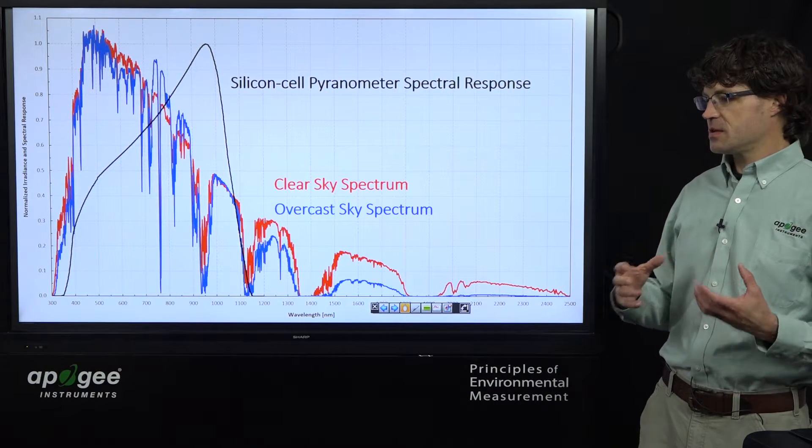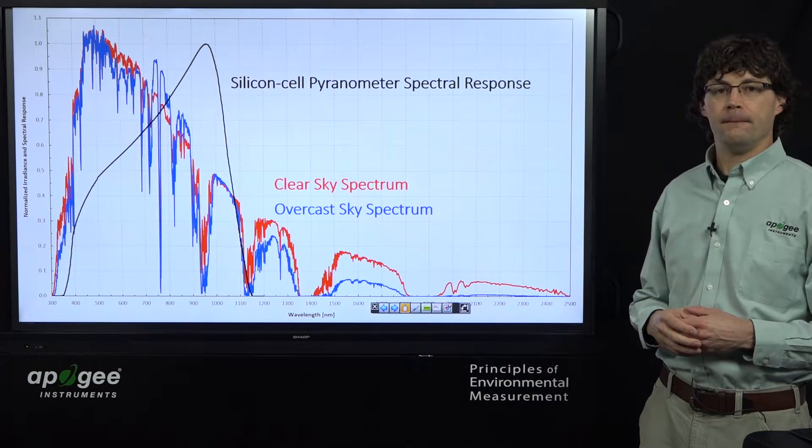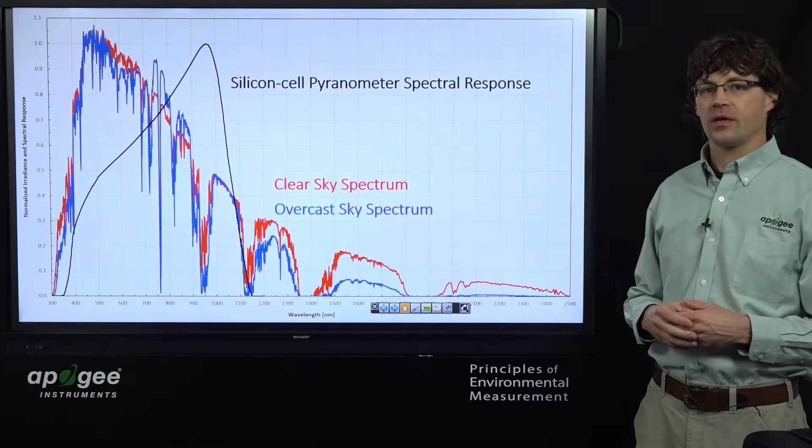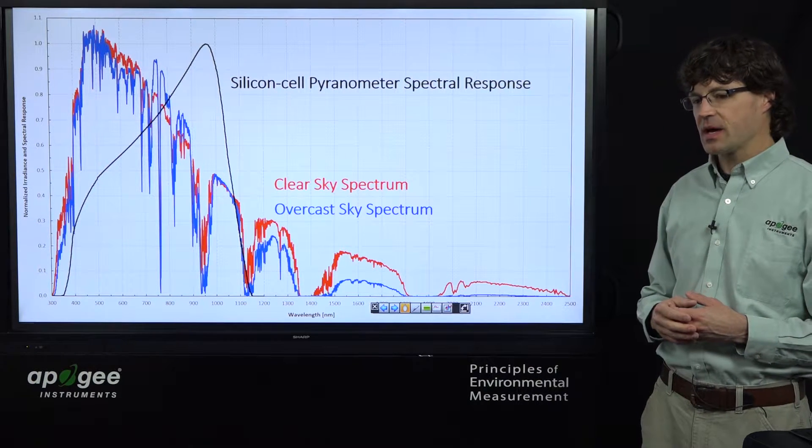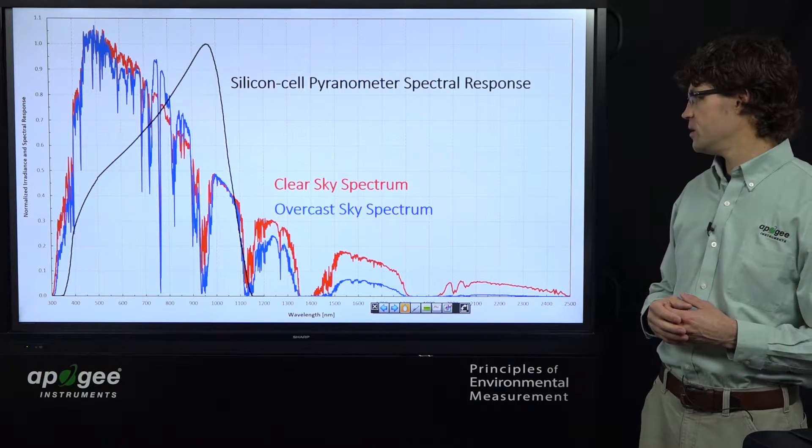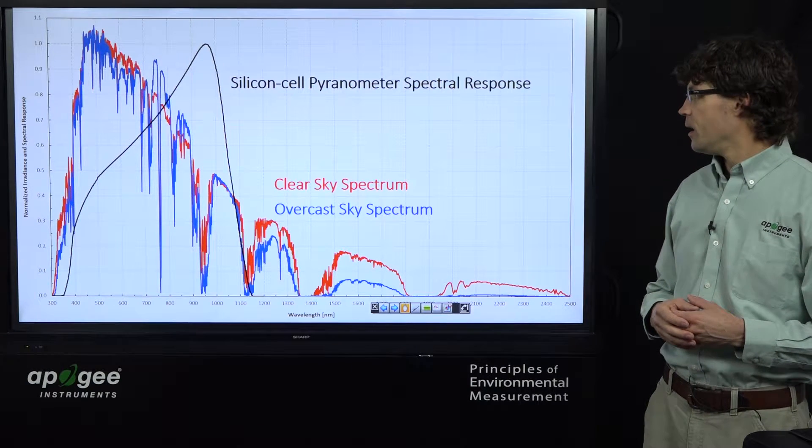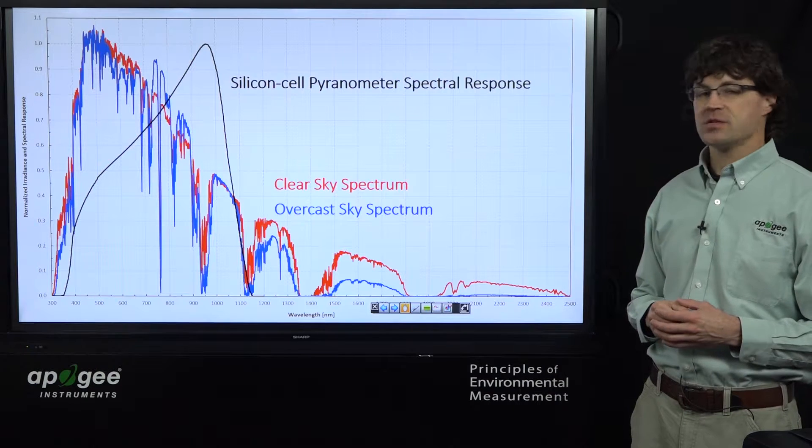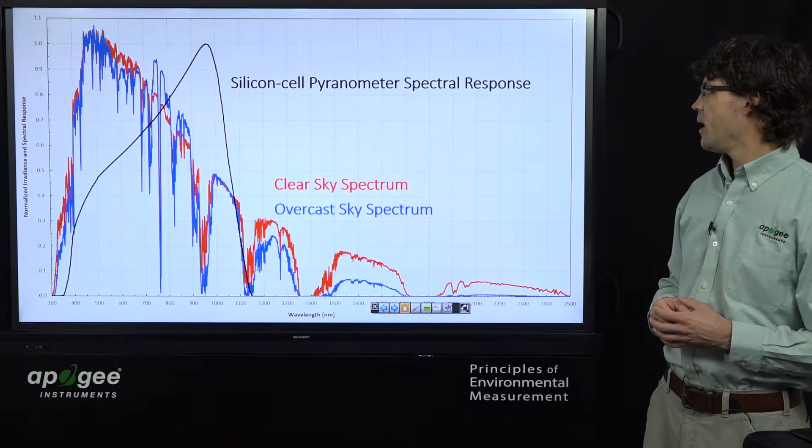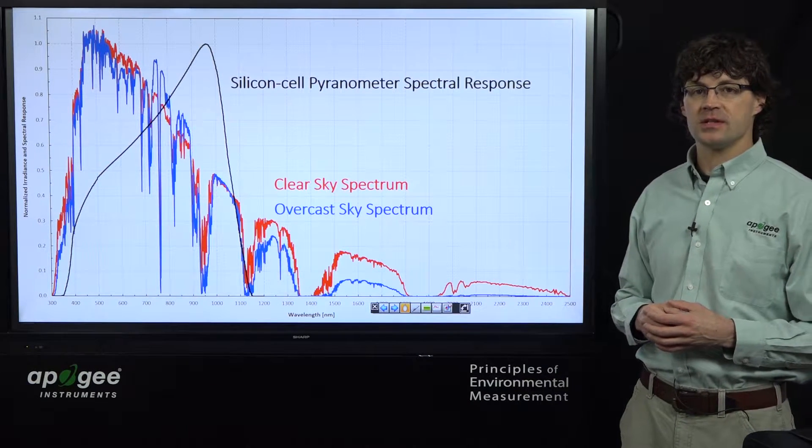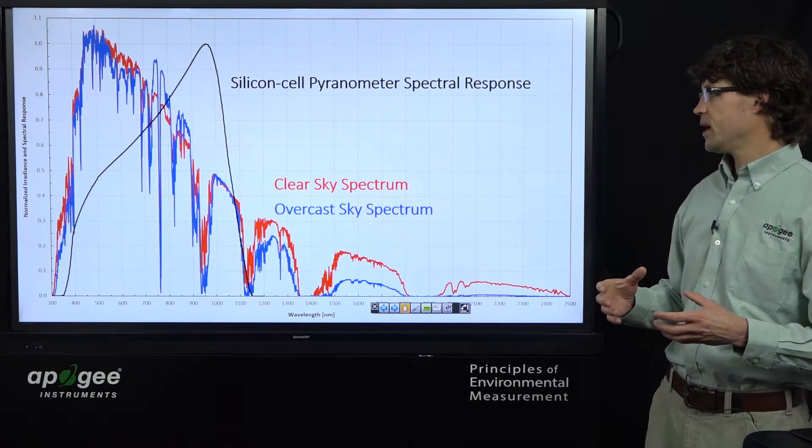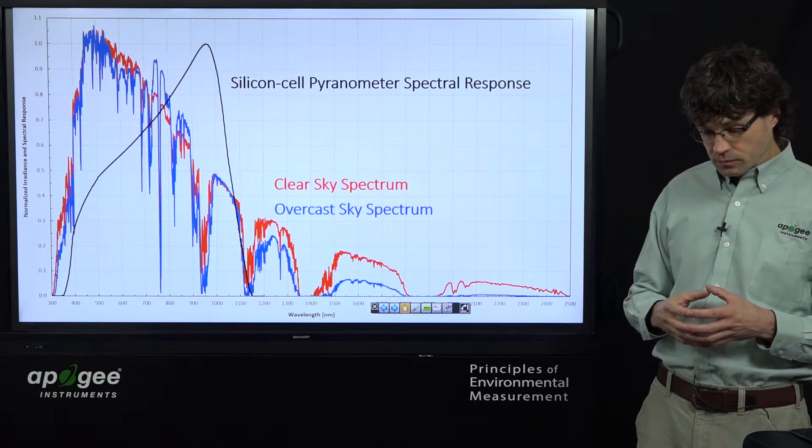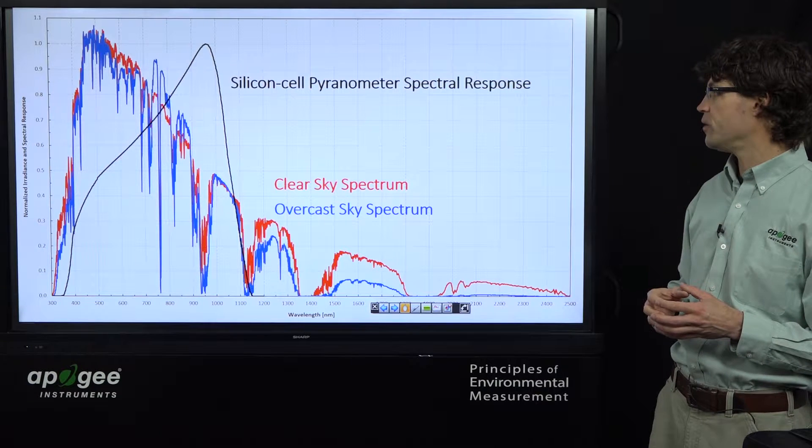So if a silicon-cell sensor is calibrated to measure accurately under clear skies, as the sky gets cloudier and cloudier, this can introduce errors. And so if we have these three pieces of information, the clear sky spectrum, an overcast sky spectrum, and the spectral response of the sensor, we can actually predict what the error will be assuming calibration to one of the conditions.